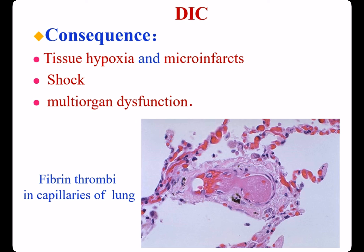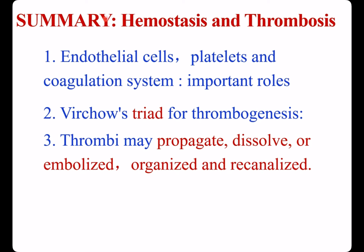The consequence of DIC: thrombi result in tissue hypoxia, microinfarcts, shock, and multi-organ dysfunction. In summary, for hemostasis and thrombosis, endothelial cells, platelets, and the coagulation system all play important roles. Serious injury, abnormal blood flow — stasis or turbulence — and hypercoagulability are various triggers for thrombogenesis. In the end, thrombi may propagate, dissolve, embolize, or become organized and recanalized.